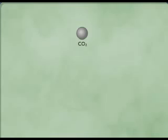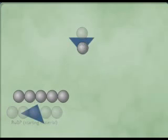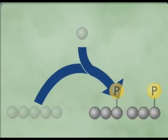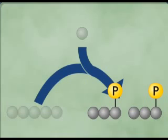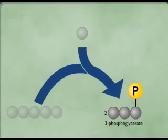During the Calvin cycle, carbon dioxide (CO2) is added to a 5-carbon molecule called RuBP. The resulting 6-carbon molecule is unstable and quickly splits into two 3-carbon molecules called 3-phosphoglycerate.